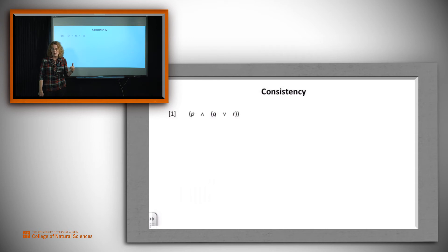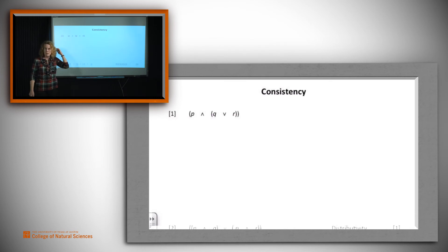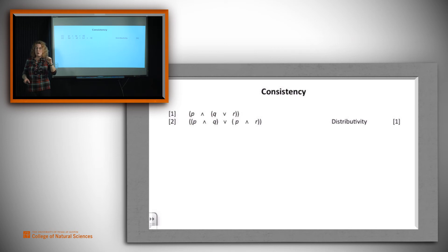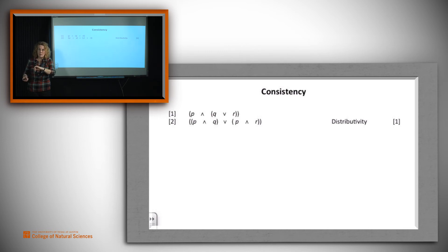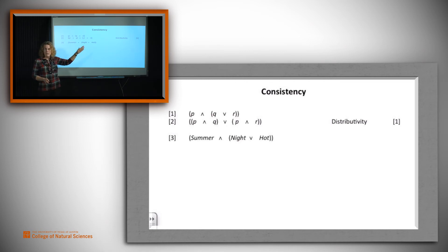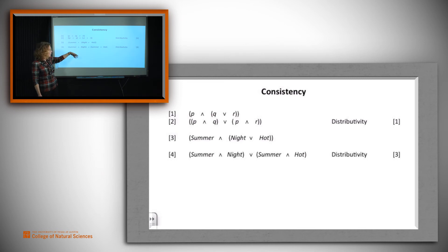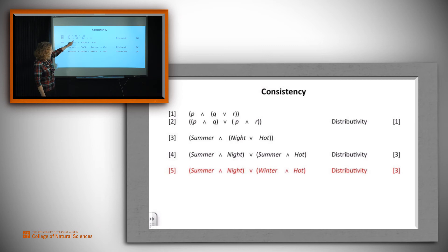That means one thing is really important when we do substitution: we must be consistent. So if we have that (p and q) or r is equivalent via distributivity to the expanded form, and we go to substitute some other expressions for p, q, and r, we have to make sure — since p occurs twice here — that if we substitute something else for p, we do it in both places. For example, given 'summer and night or hot,' we can use distributivity to get '(summer and night) or (summer and hot).' What we cannot do is substitute 'summer' for one instance of p and 'winter' for the other, getting '(summer and night) or (winter and hot)' — that doesn't follow from the original claim.